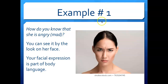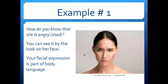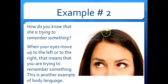Example number one: how do you know that she is angry or mad just by looking at her — she's not saying anything. You can see it by the look on her face: the eyebrows, the forehead, and her serious eyes. She has a furrowed forehead, serious eyes, and is not smiling at all. Her facial expression, which is part of body language, shows that she is mad without her having to say anything.